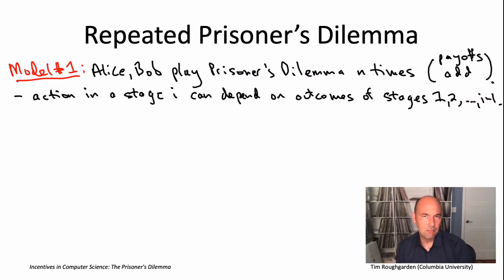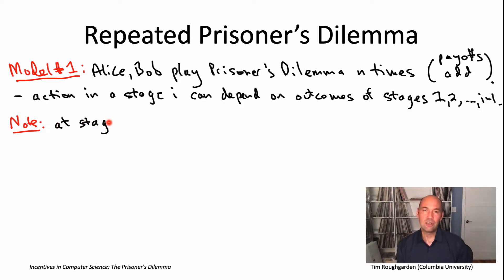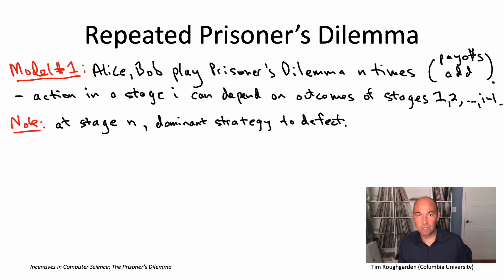One might hope that with this repeated model, because Alice and Bob have to deal with each other for a long period of time, you'd see cooperation — at least if n is big enough. But if we apply cold clinical logic to this model, that is not, in fact, the case. Consider the very last stage, stage n, stage 100. Alice and Bob both know it's the last stage, so there can't possibly be any future consequences of their actions. We're back in the usual prisoner's dilemma — it's a dominant strategy for each of them to defect, so that's what they'll do.